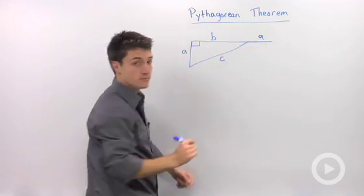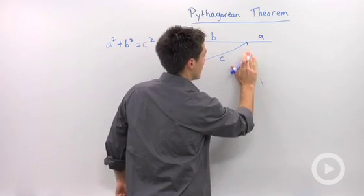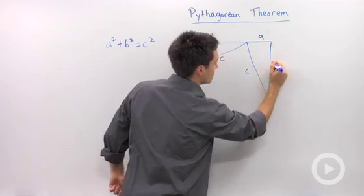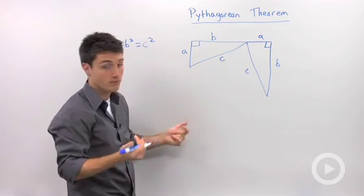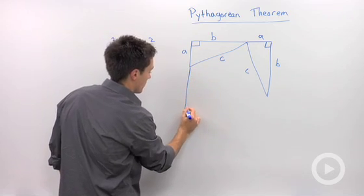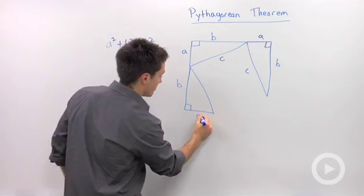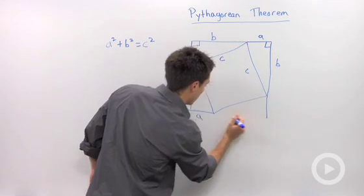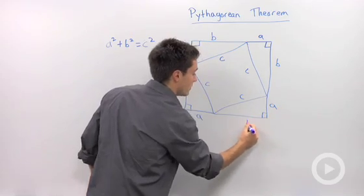I'm going to draw in side a, then my hypotenuse c — I need to make this a little bit longer — then side b, and that forms a right angle. These triangles are congruent even though they might not look it. The next triangle has a right angle, side b, side a, and hypotenuse c. And our last triangle has side c, side a, and side b.